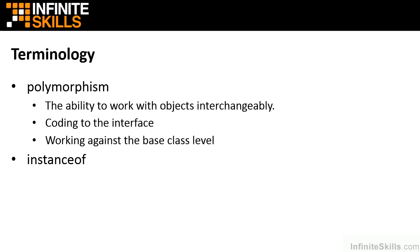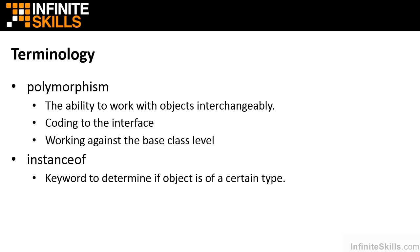The final term is instanceof. This keyword is used to determine if an object is a specific type. For example, if we're working at the polymorphic level with a collection of Person objects, we'd use instanceof to determine if an object is not just a Person, but a Worker or any other subclass type. Whenever we need to downcast, instanceof is very important for determining exactly what we should downcast to. We'll continue to see all of this as we study object inheritance, interfaces, abstract classes, and polymorphism.